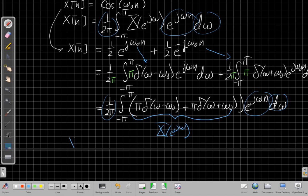So just to finish up, so our answer here is that we've just shown that for the cosine of ω₀n the Fourier transform is π·δ(ω - ω₀) + π·δ(ω + ω₀). Alright, so that's the cosine.